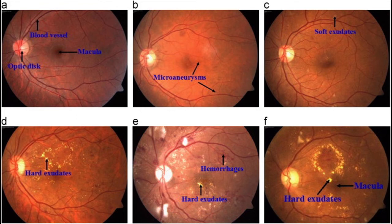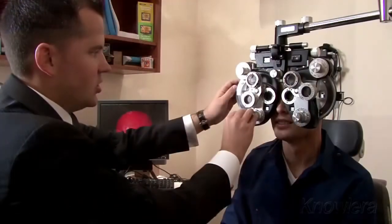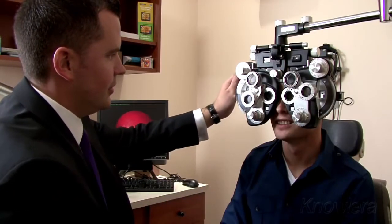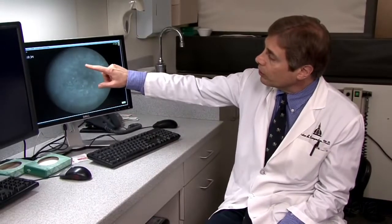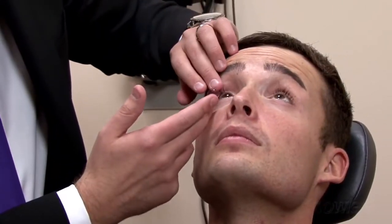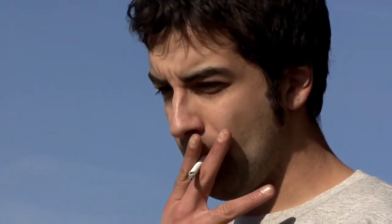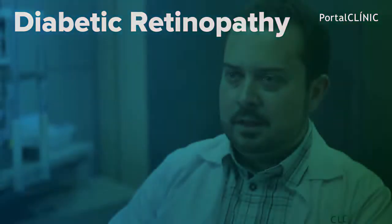That brings us to staging. How do we stage diabetic retinopathy? We divide it into two: non-proliferative and proliferative. The blockage in those arteries induces growth factors causing new vessels to develop, and those new vessels are not as strong. The formation of new blood vessels is called proliferation. Non-proliferative represents the initial stages where you're not yet getting these new weak vessels, but you start seeing certain features in the eye.